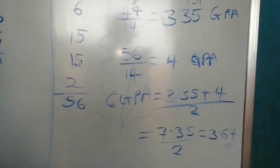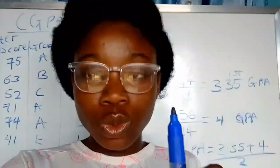A CGPA of 3.67 falls in the second class upper category. When the person had that assumption — with an A in the 3-unit course — the CGPA was formerly 3.35 (second class lower), and we just changed one 3-unit course to an A, which brought the second semester GPA to 4.00 and raised the CGPA to 3.67, which is second class upper. Sometimes you think you're doing well but you're not — you can calculate your CGPA and find out.